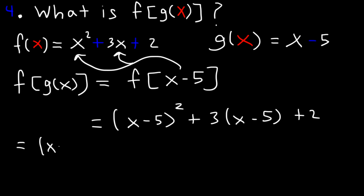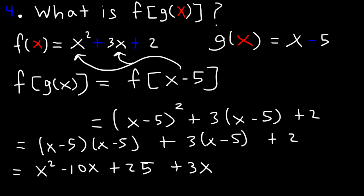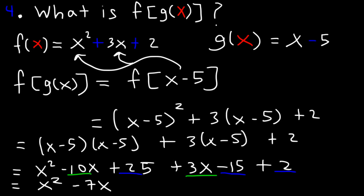x minus 5 squared is x minus 5 times x minus 5. If we FOIL it, it's going to be x squared minus 10x plus 25. If we distribute 3 to x minus 5, it's going to be 3x minus 15, and then plus 2. Now let's combine like terms: negative 10x plus 3x is negative 7x; 25 minus 15 is 10; 10 plus 2 is 12. So the answer is x squared minus 7x plus 12.